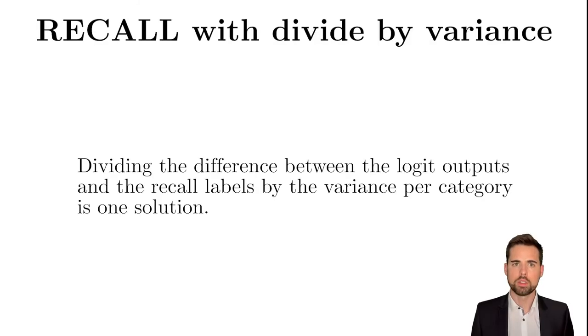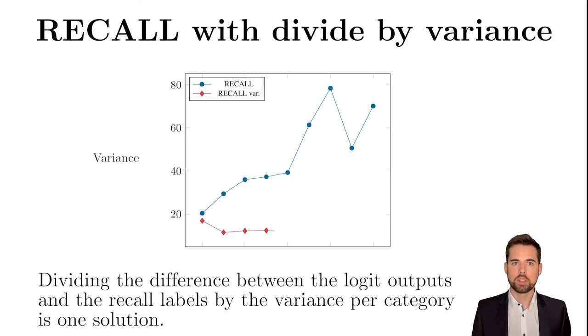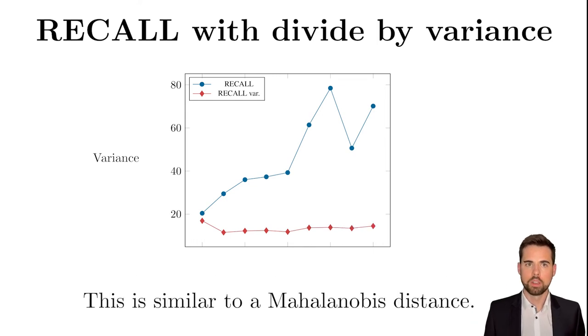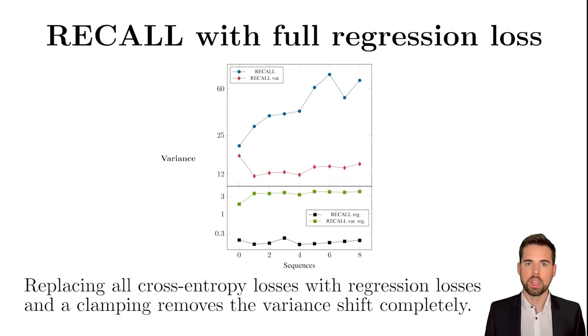One solution is to divide the difference between the logit outputs and the recall labels by the variance per category, which is similar to a Mahalanobis distance. Another solution is to replace the cross-entropy loss with a regression loss, so that instead of using a softmax, we now clamp the outputs. This replacement removes the variance shift.